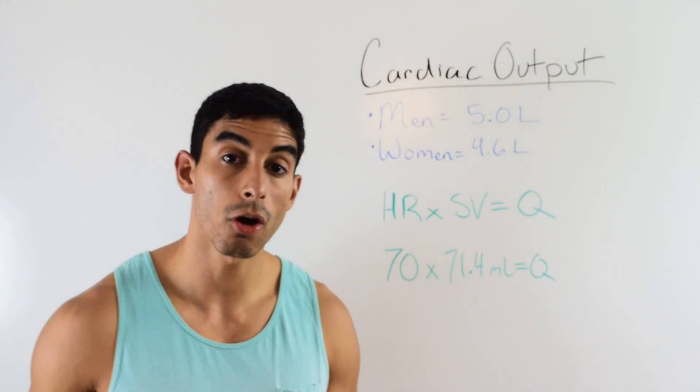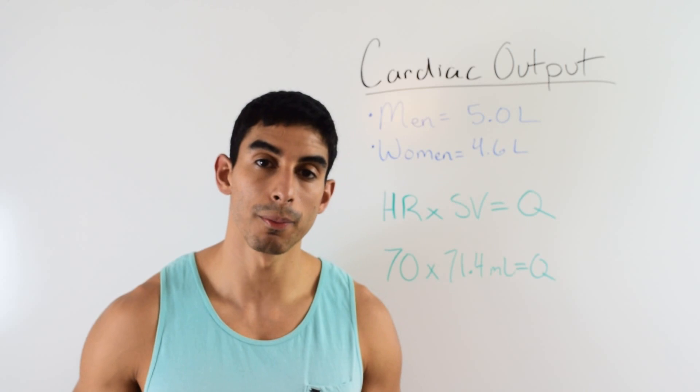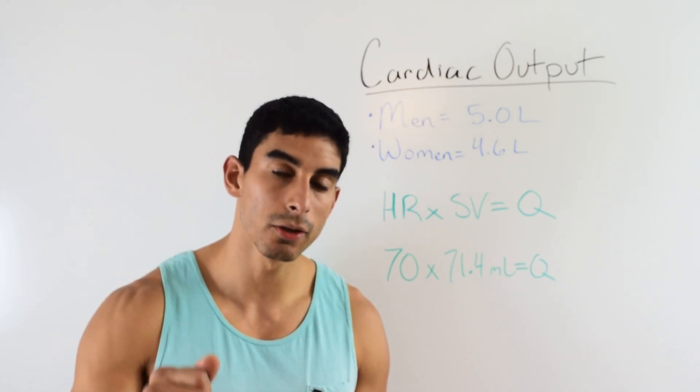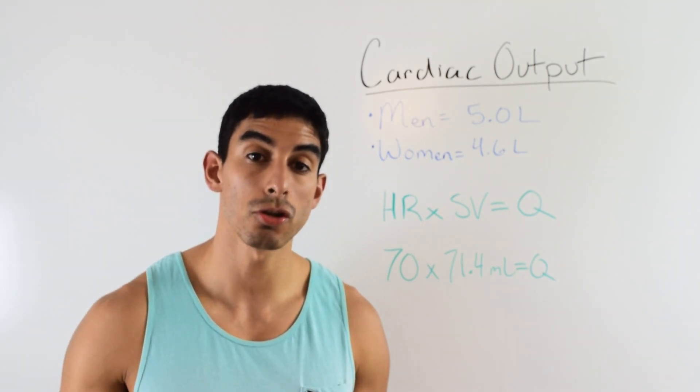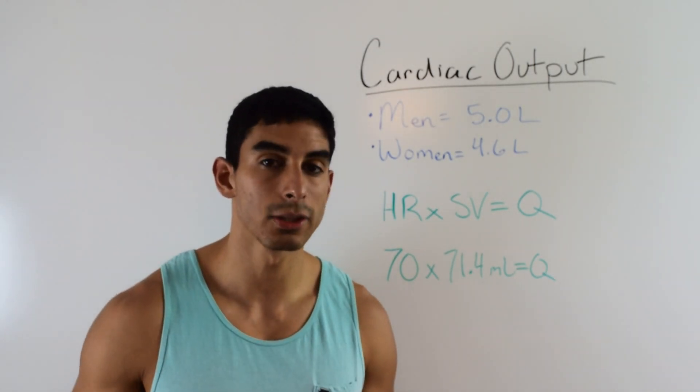So first of all, cardiac output. What is cardiac output? That's the amount of blood your heart pumps in one minute. So over the course of a minute, your heart's going to pump a certain number of times and pump out a certain amount of blood. When you calculate that over the course of a minute, that's cardiac output.